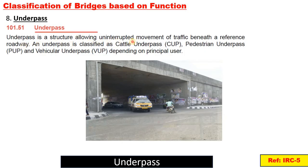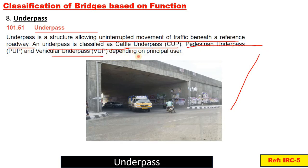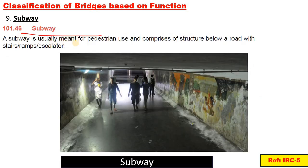An underpass is a structure for uninterrupted movement of traffic beneath a reference roadway. Underpasses are classified as cattle underpass, pedestrian underpass, and vehicle underpass on the basis of the principal user. A subway is usually meant for pedestrian use and is a compressive structure below the road with stairs, ramps, and escalators. Subway end approaches are also made with stairs, ramps, and escalators.